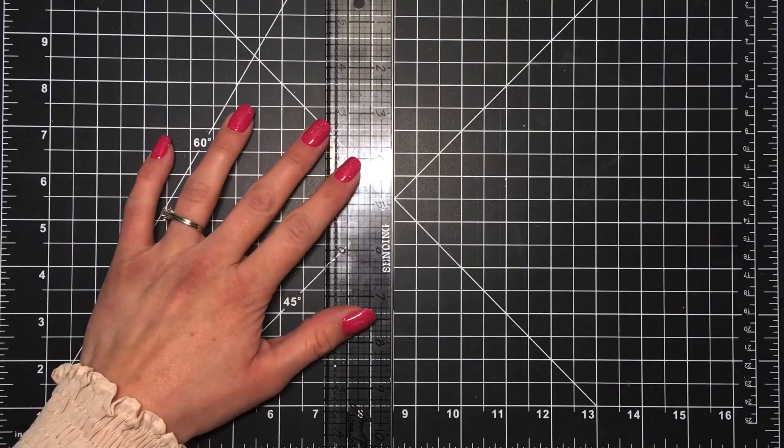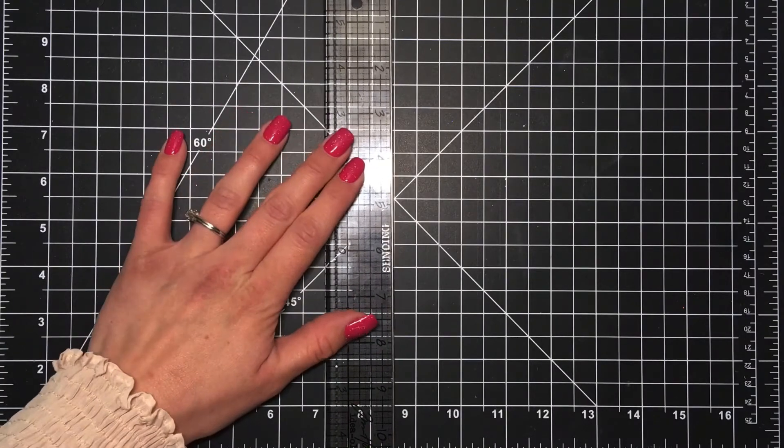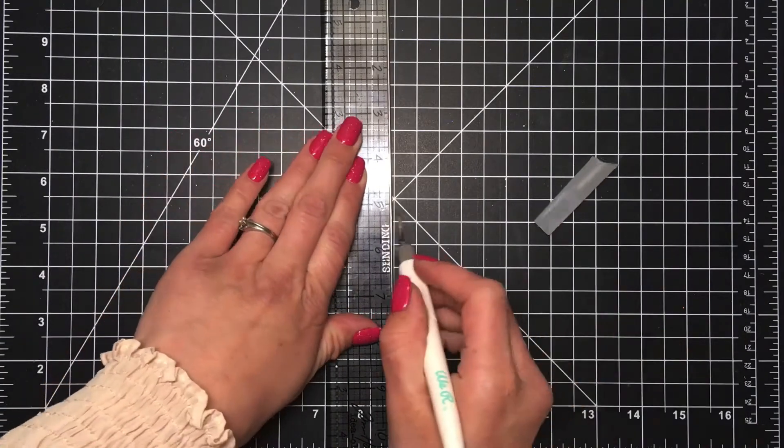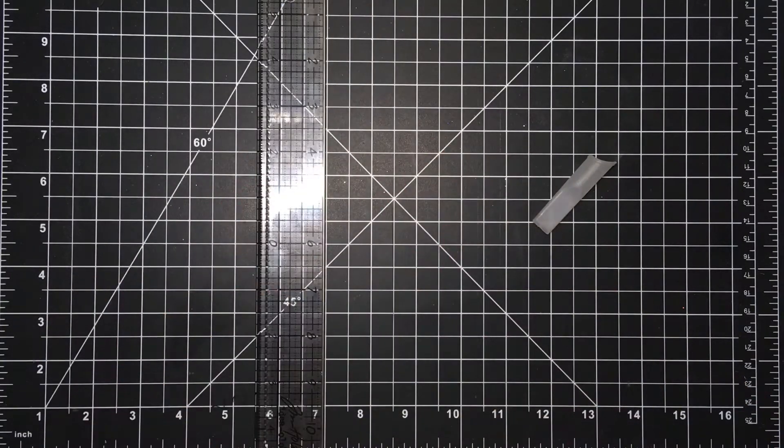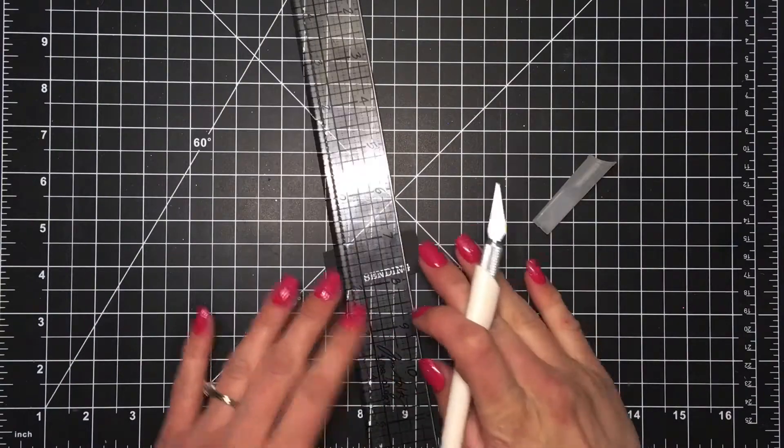Here I'm using my Tim Holtz craft ruler and I will be using the metal side of that and my craft knife to trim off the excess around that sentiment to make it a nice and narrow sentiment strip.